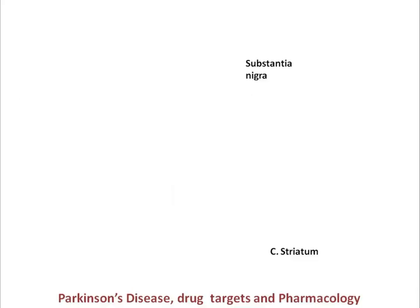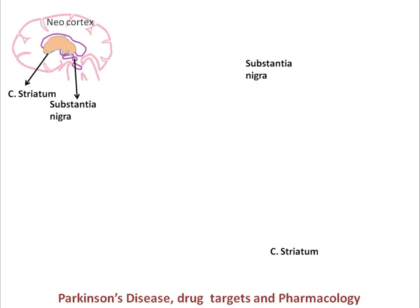Now discussing Parkinson's disease drug targets and pharmacology. In Parkinson's disease, two major areas of the brain are affected: the corpus striatum and substantia nigra. This is a progressive disorder of movement occurring in elderly patients. In these two important regions, dopamine levels go down significantly.